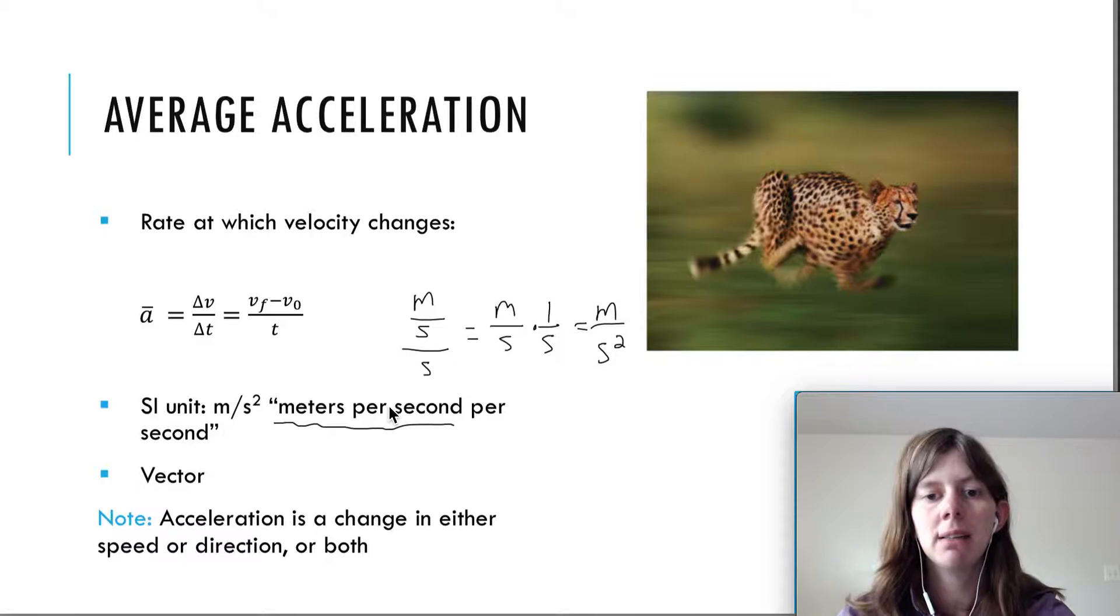Acceleration is a vector. You notice that it's the rate at which velocity changes, not the rate at which speed changes. So, this means that since velocity has a magnitude and direction, that your acceleration can be a change in either your speed, you can speed up or slow down, or you can change your direction, or you can do both, and that is still an acceleration.